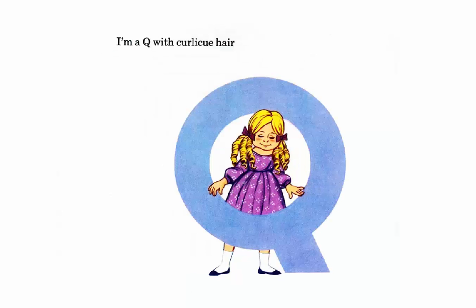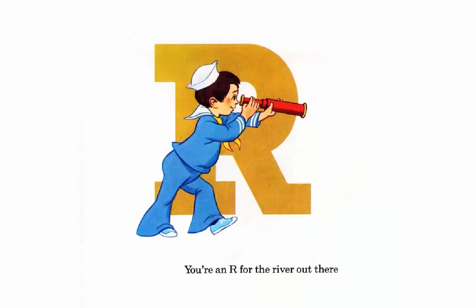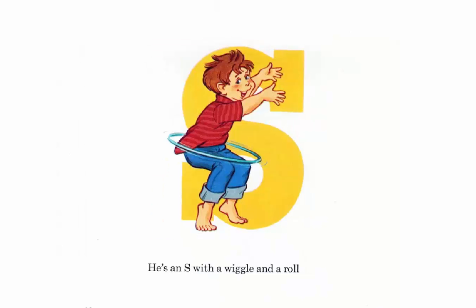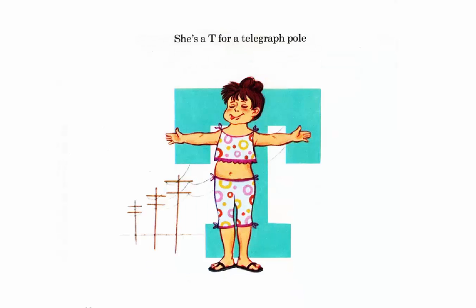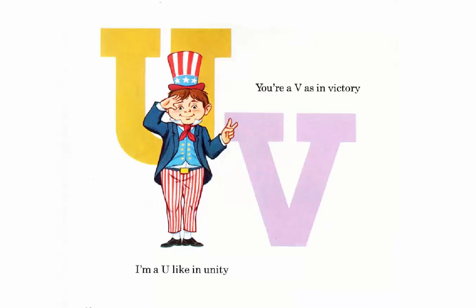I'm a Q with curly Q hair. You're an R for the river out there. He's an S with a wiggle and a roll. She's a T for a telegraph pole. I'm a U like in unity.